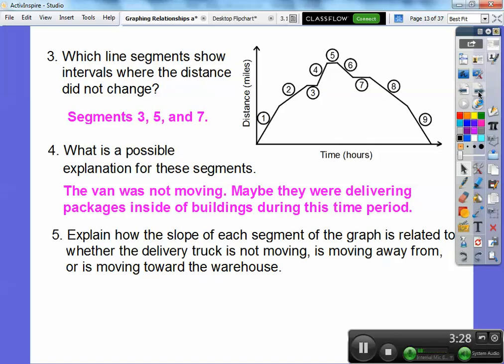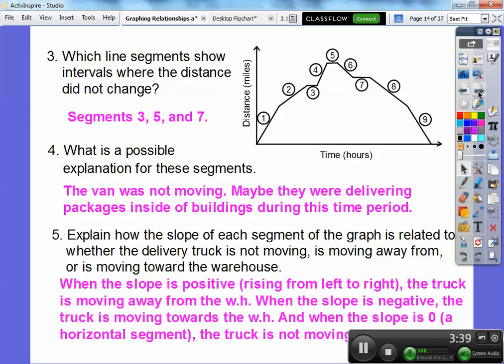So explain how the slope of each line segment of the graph is related to whether the truck is not moving, is moving away from or is moving towards the warehouse. So I said something like this. When the slope is positive, when it's rising, so like these guys right here, one, two, four. When it's rising, the truck is moving away from the warehouse, WH is warehouse. When the slope is negative, so when the slope is negative like six, eight and nine, the truck is moving back towards the warehouse. And when the slope is zero at three, five and seven right here, the truck is not moving. So that's how you explain that.